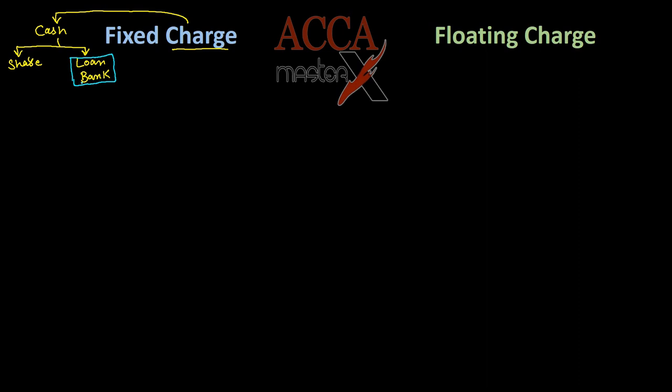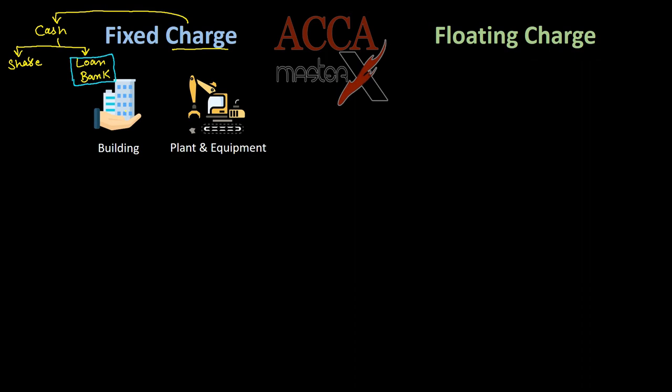We have two main types of charges. In the case of a fixed charge, the bank may want to secure the loan amount against the fixed assets of the company, such as building, property, plant and equipment. But in the case of a floating charge, the bank may want to secure this loan amount against the current assets of the company, such as inventory and receivables.